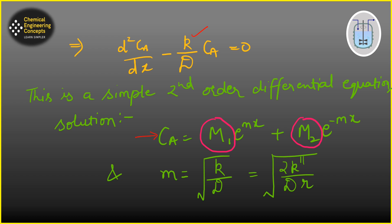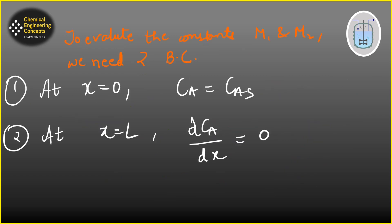This ODE can be easily solved. The solution is: C_A = m1·e^(mx) + m2·e^(-mx), where m1 and m2 are two constants, and m is defined as √(k/D), where k is the reaction rate constant and D is diffusivity. It can also be defined in terms of different cases.